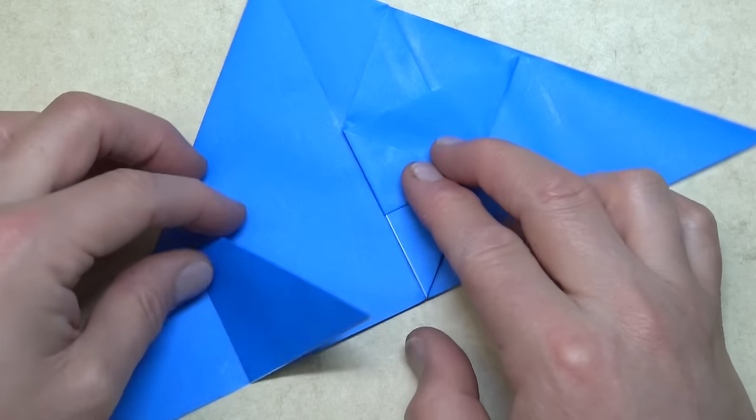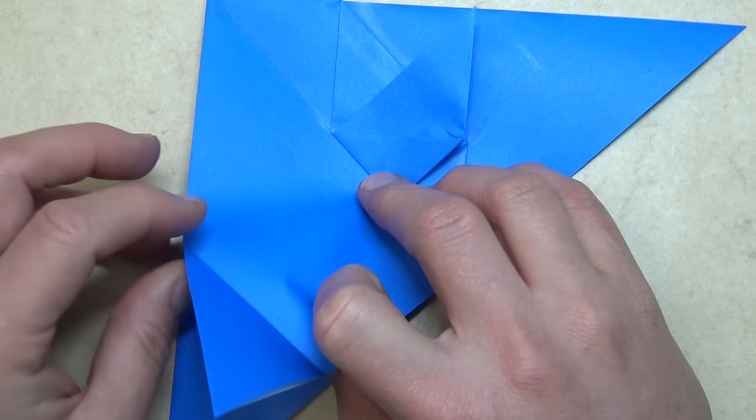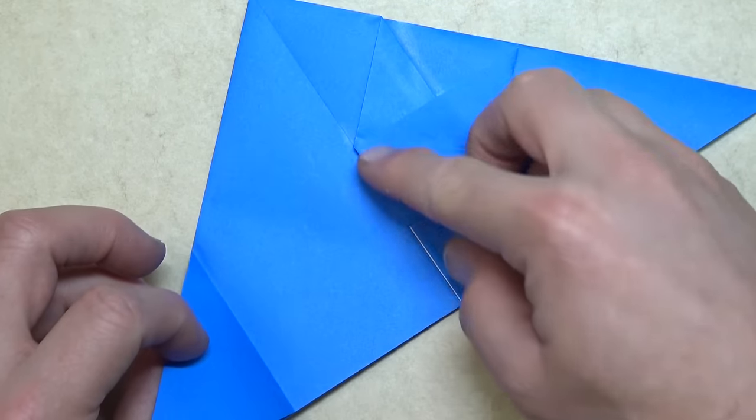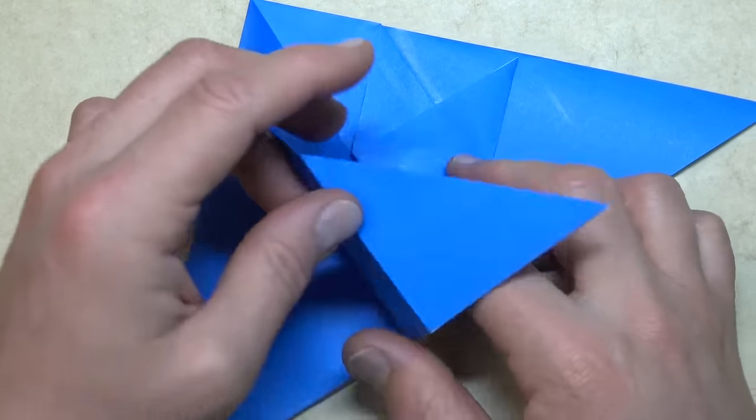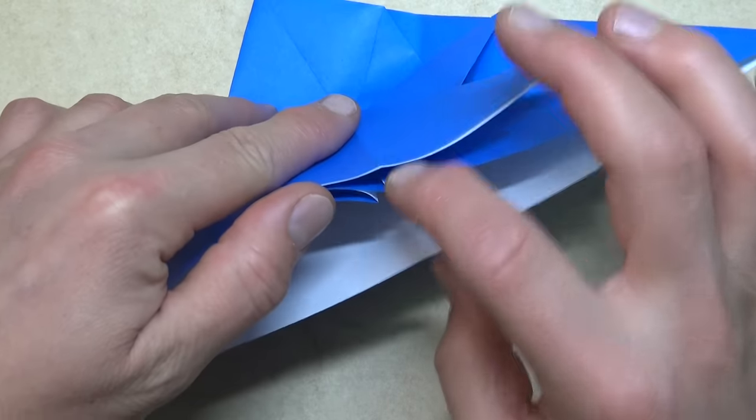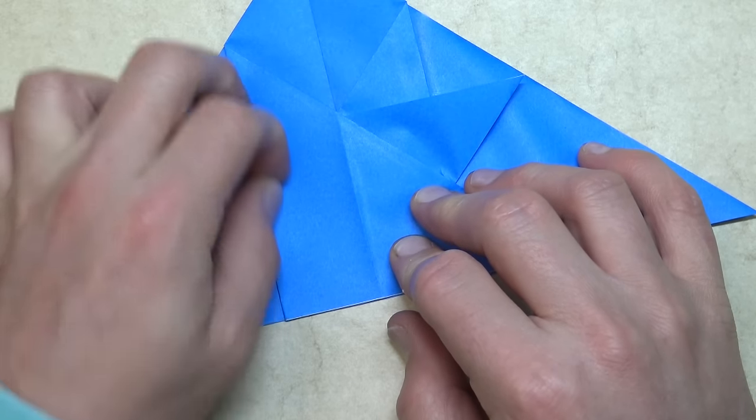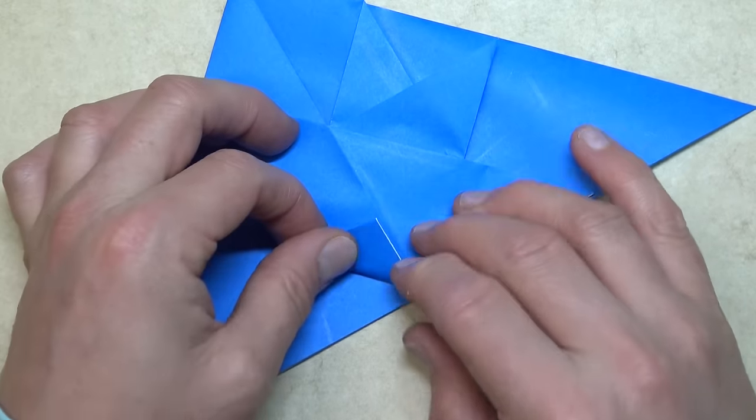And repeat all of that on this side. So, unfold, and fold this crease to this middle. You can see that you're perfect by looking here. Fold up like this.